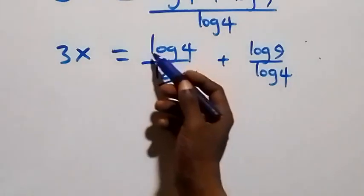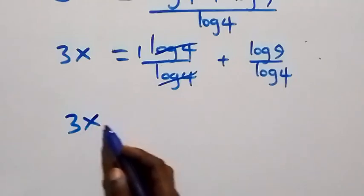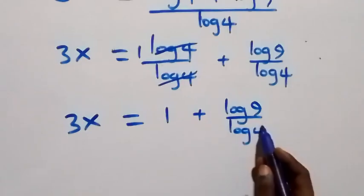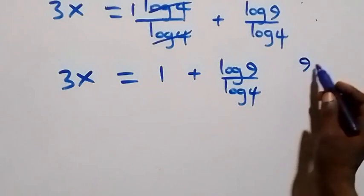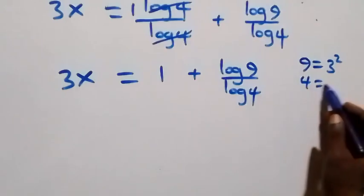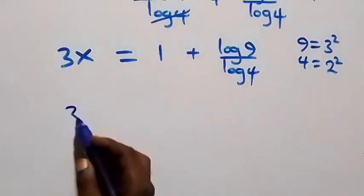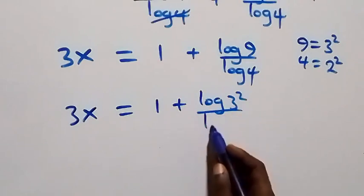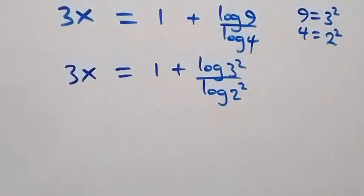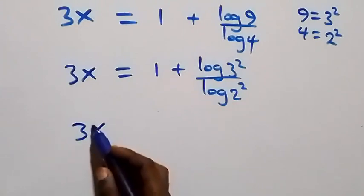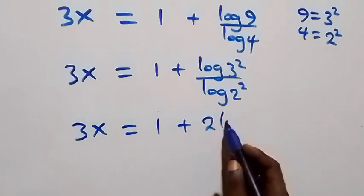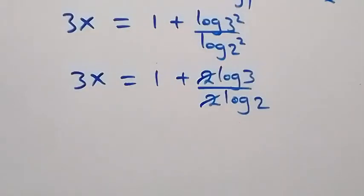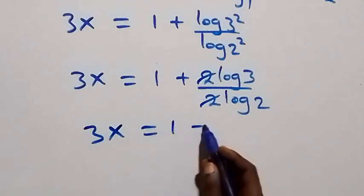This implies log 4 over log 4 cancels to give 1, so 3x equals 1 plus log 9 over log 4. We can express 9 as 3 squared and 4 as 2 squared, giving 3x equals 1 plus log(3 squared) over log(2 squared). Applying the power rule of logarithms, the powers come out front and we have 3x equals 1 plus 2·log 3 over 2·log 2. The 2s cancel each other.